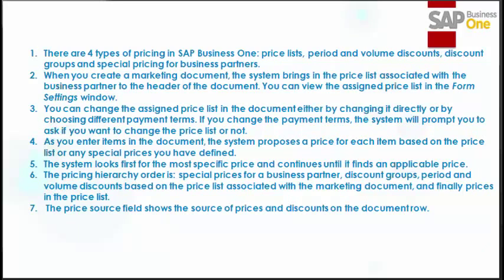To sum up, there are four types of pricing in SAP Business One: price list, period and volume discounts, discount groups, and special pricing for business partners. When you create a marketing document, the system brings in the price list associated with the business partner to the document. You can view and change the assigned price list via form settings or by choosing different payment terms. As you enter items, the system proposes a price based on the pricing hierarchy: special prices for business partner, discount groups, period and volume discounts, and finally prices in the price list. The price source field shows the source of prices and discounts in each document row.